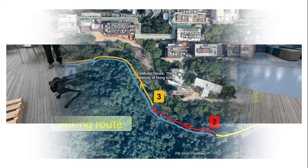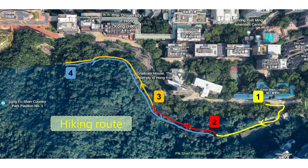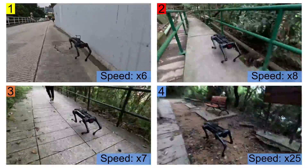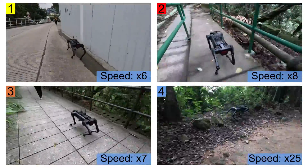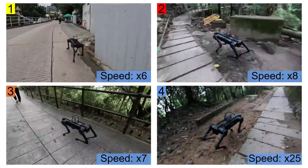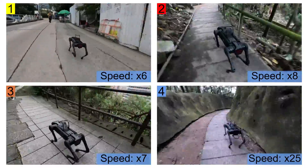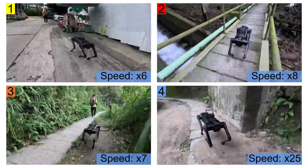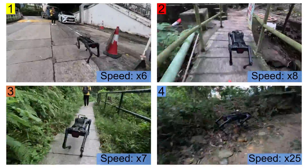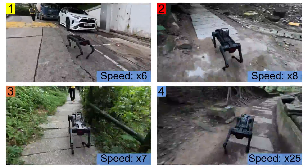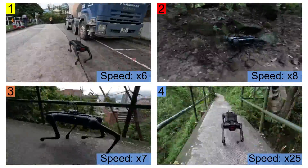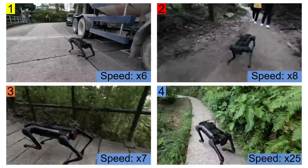We even selected a hiking route in a wild country park. Accomplishing this hiking requires the robot to traverse soft gravel, dense woods, slippery stone roads, and more. Notably, the robot finishes this long path without a single fall.